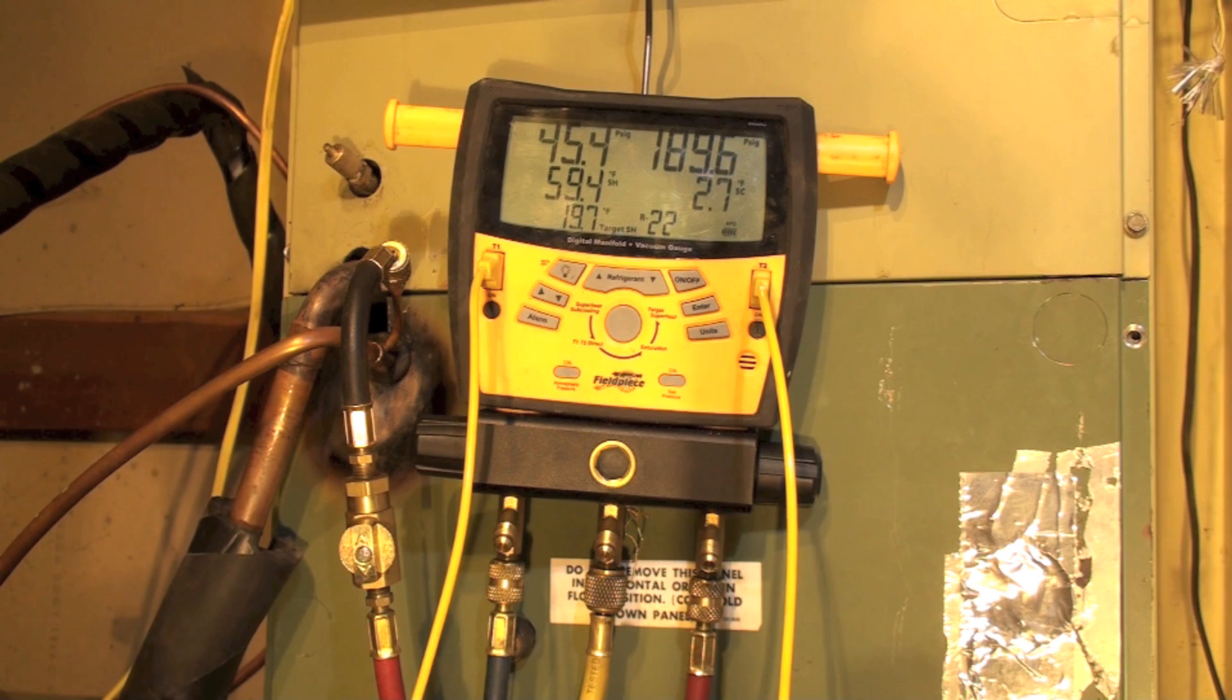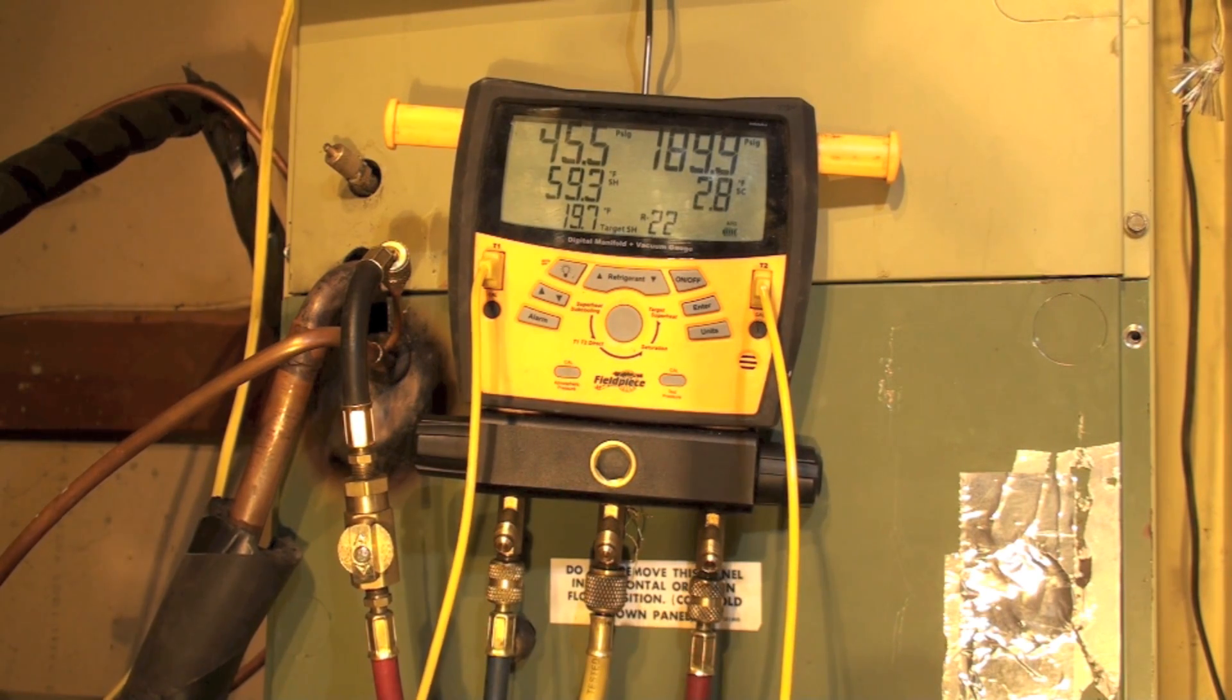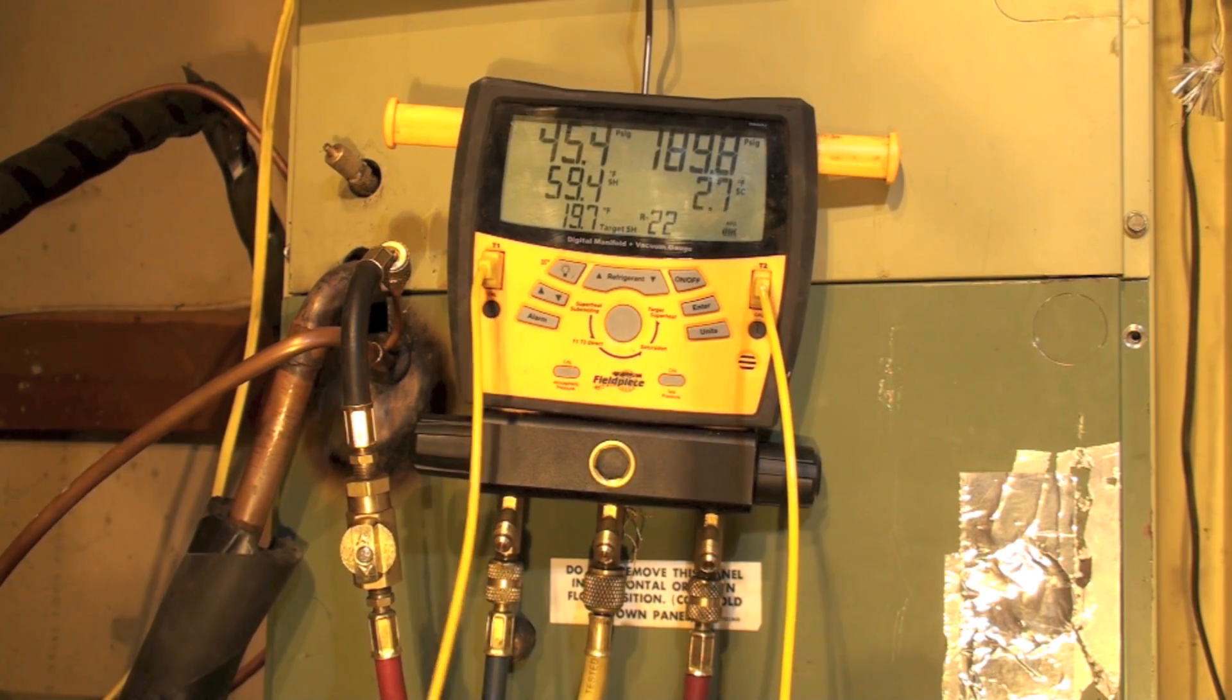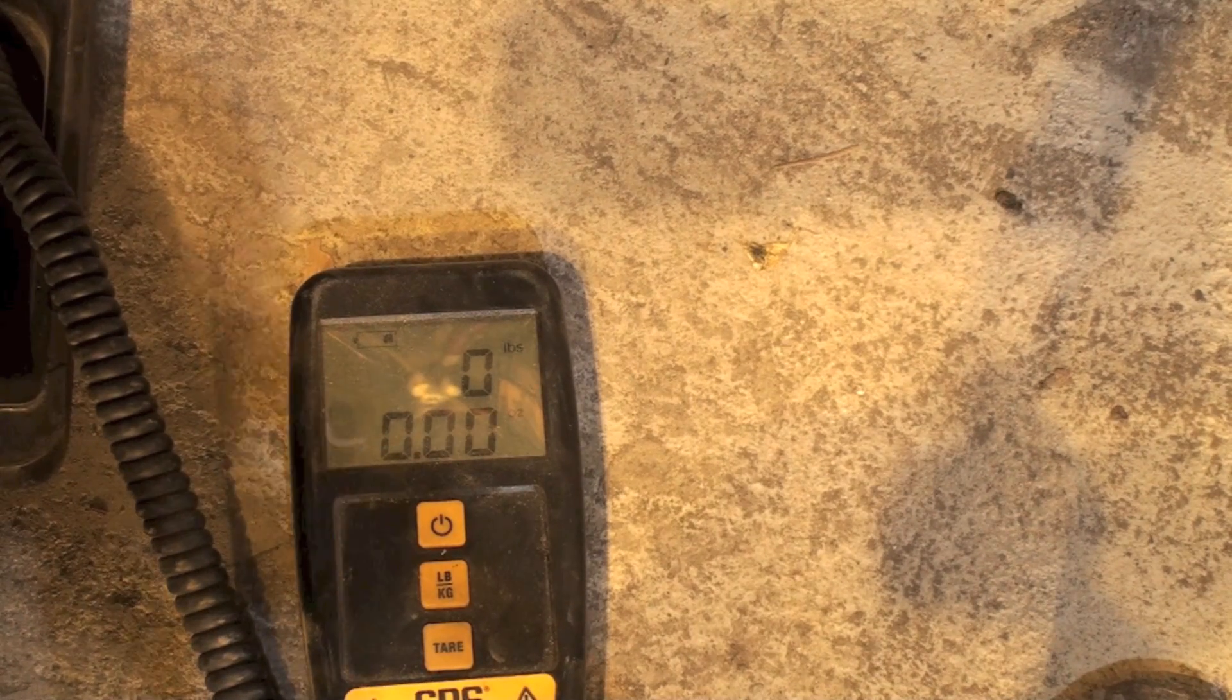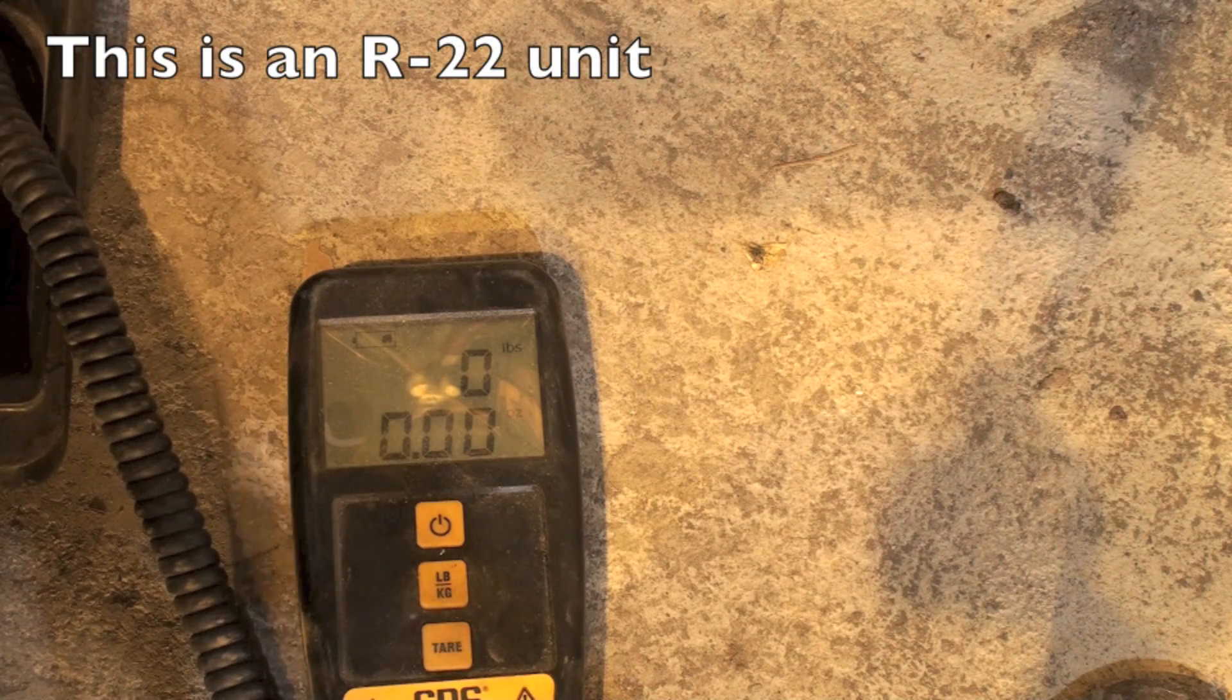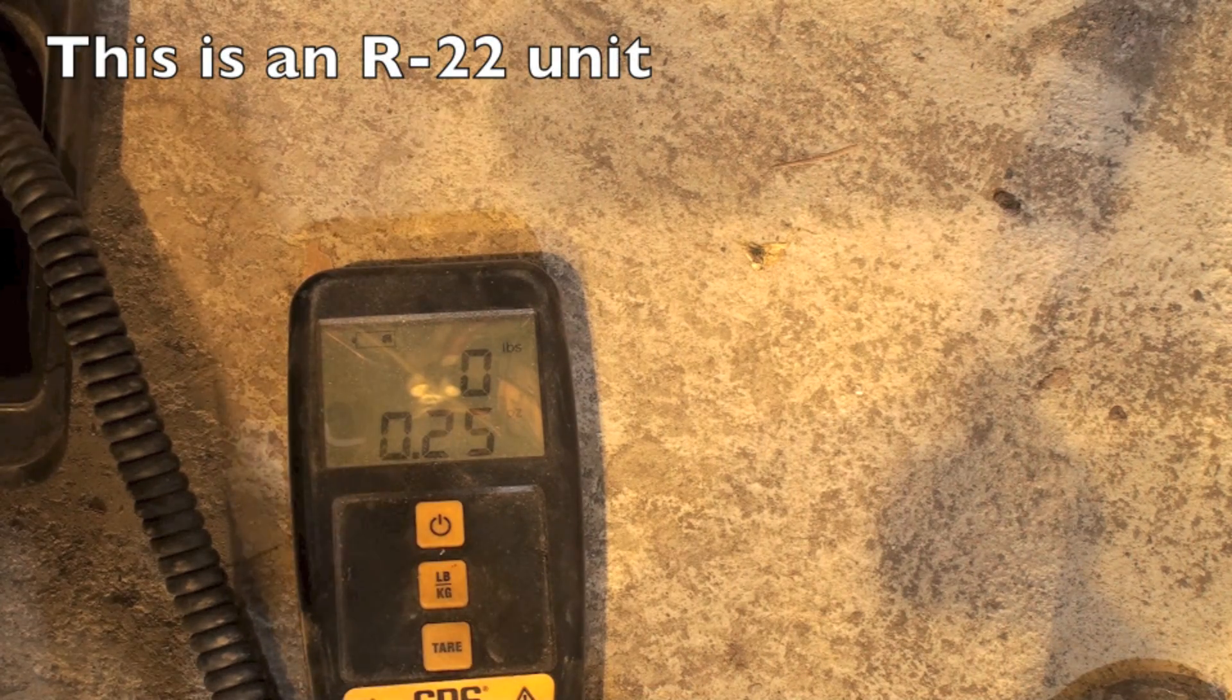One thing I don't want to do is add charge without knowing how much I'm adding. So the refrigerant is on a scale and we're going to watch the scale. We're going to see how much we put in. You can see our scale is zeroed out and we're going to start adding charge. This is an R22 machine.